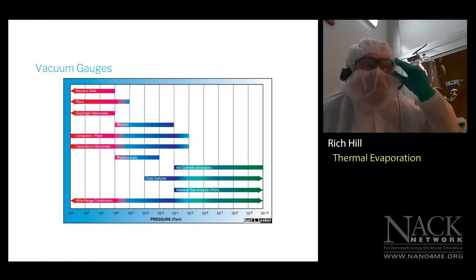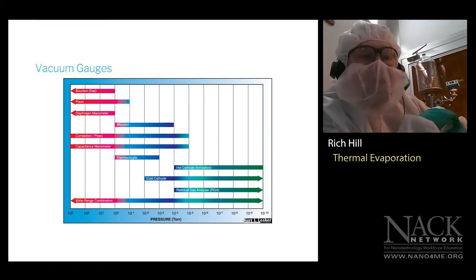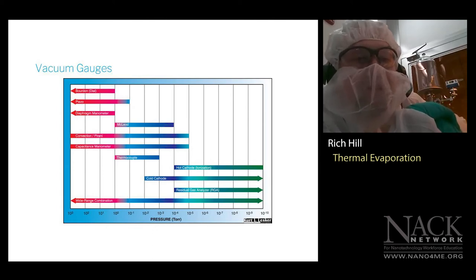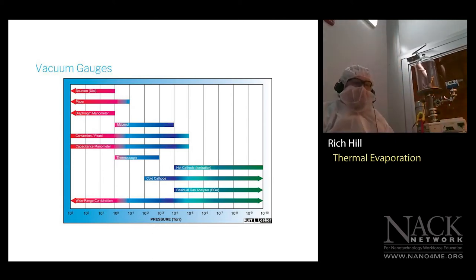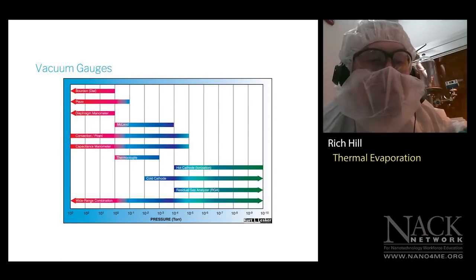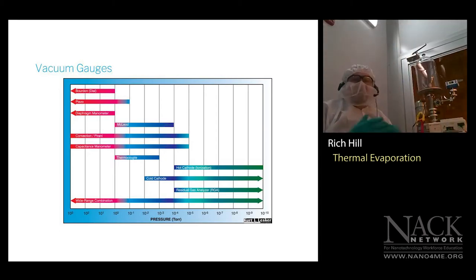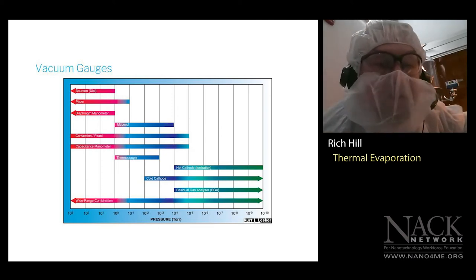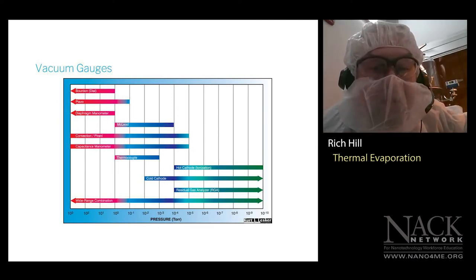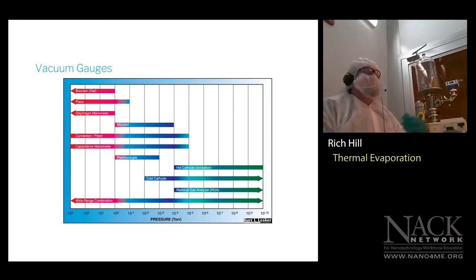Here's a chart showing which gauges are used for which pressure ranges. For low range we have piezo and diaphragm gauges, and the Bourdon gauge — one of the least expensive options that can tell you that you're pulling a vacuum. Then convection, Pirani, and capacitance manometer gauges are commonly used for rough vacuum. For high vacuum you have hot cathode and cold cathode gauges.